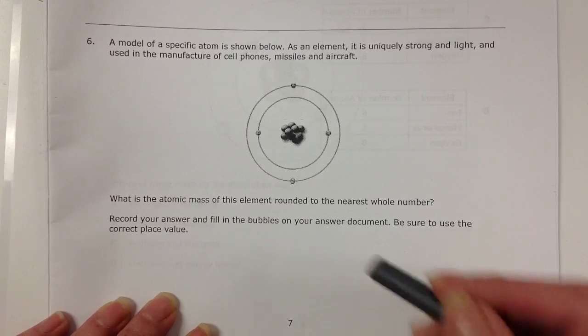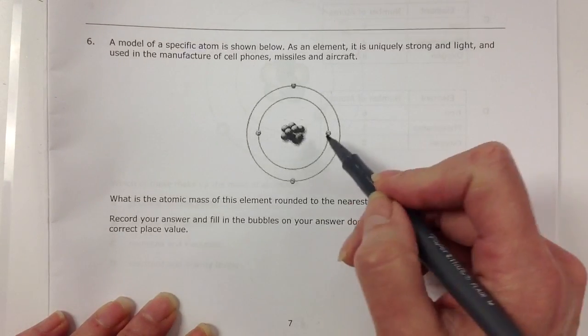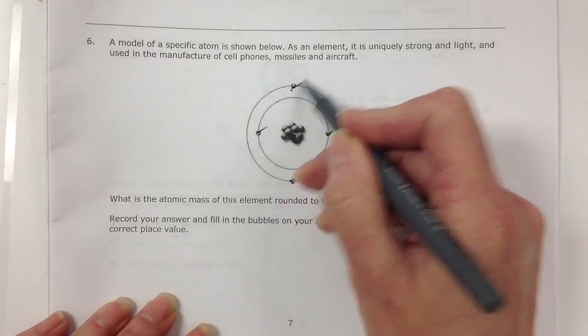The easiest way to do that is just to count your electrons. So we have one, two, three, four electrons.